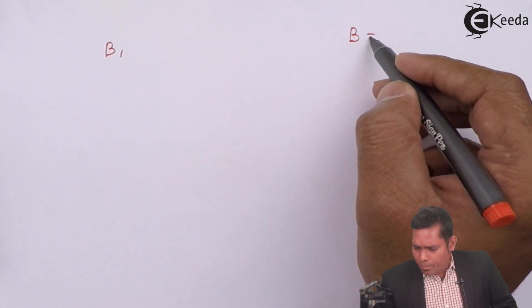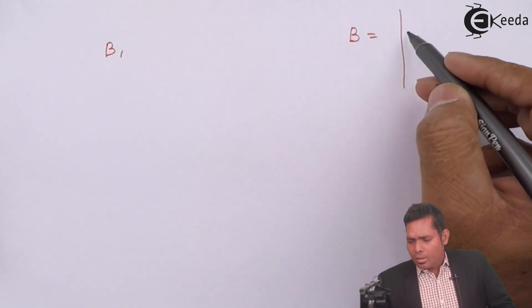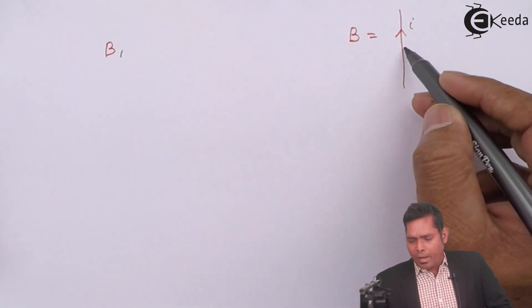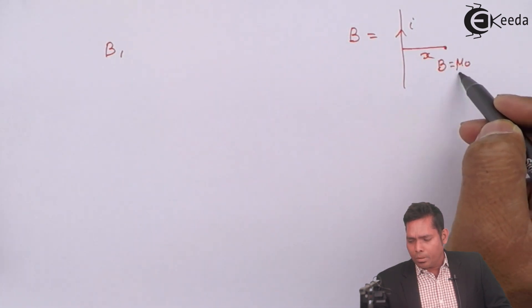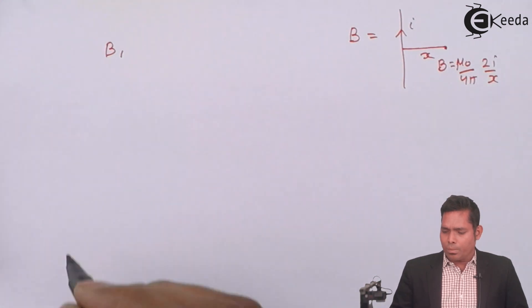In general, the formula for B at a distance of a current carrying wire at a distance x, the formula for B comes out to be mu 0 upon 4 pi 2 i by x. This formula is going to use.